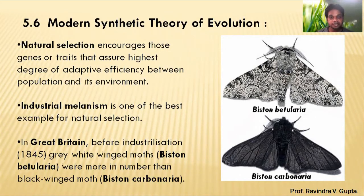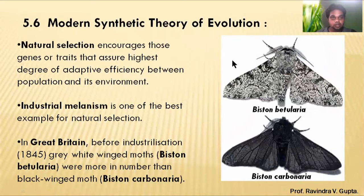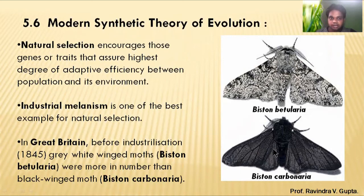Before 1845, when there was no industrial revolution in Great Britain, the white-grey species Biston betularia was in high number compared to the black species Biston carbonaria, which was low in number.